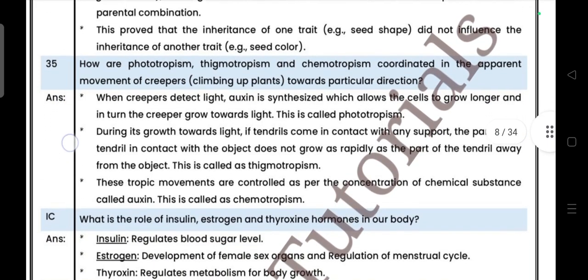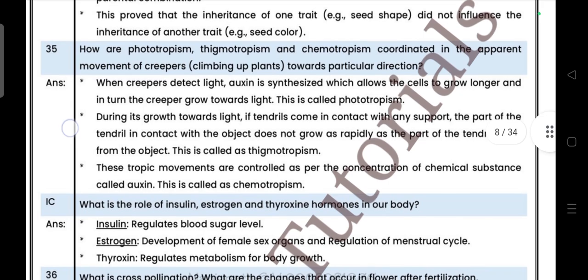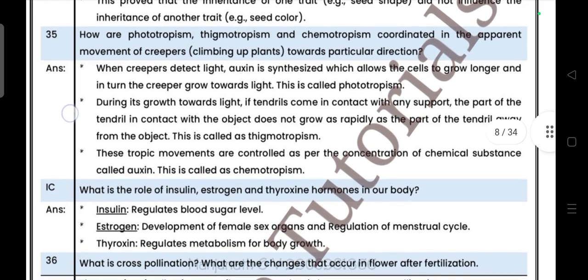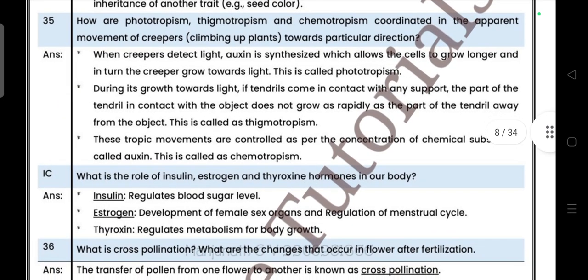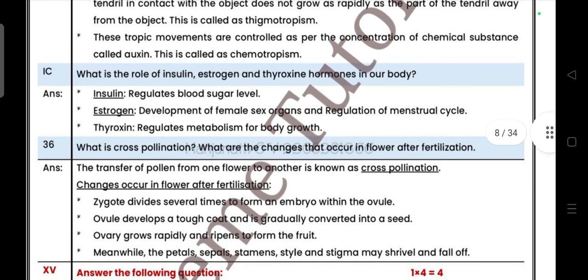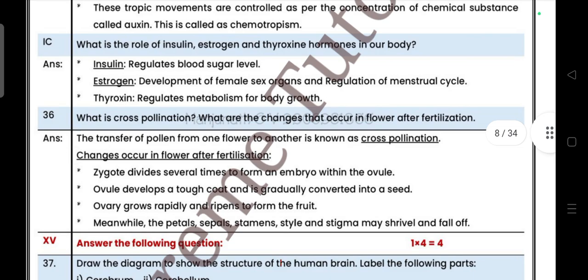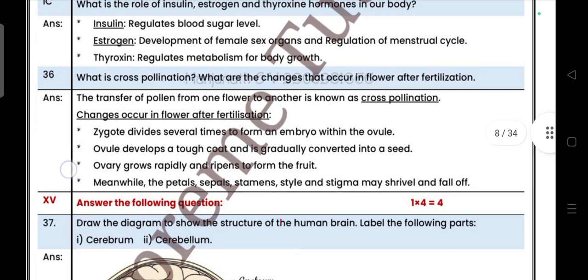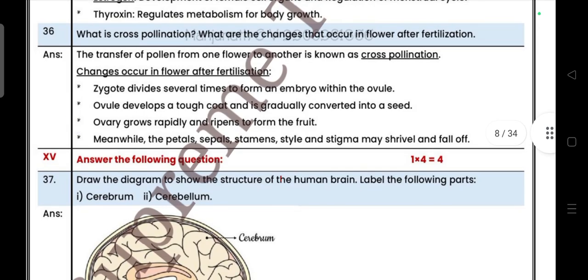Next one: how are phototropism, thigmotropism, and chemotropism coordinated in the apparent movement of the creepers climbing a plant towards the particular direction? What is the role of insulin, estrogen, and thyroxin hormone in our body? What is cross pollination and what are the changes that occur in the flower after fertilization?